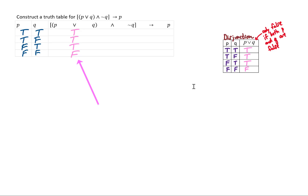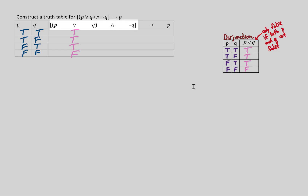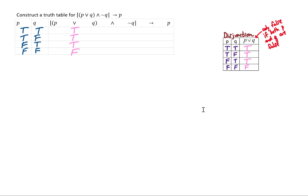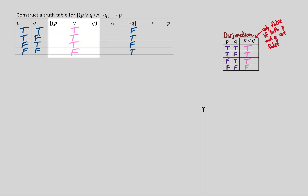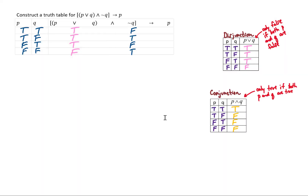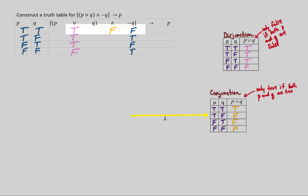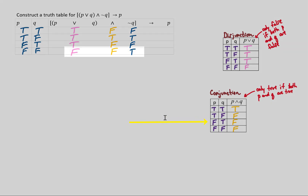Now we'll take that P or Q column and compare it with NOT Q using a conjunction. NOT Q is false, true, false, true — just reversing all the truth values in Q. Using the conjunction table, results are only true if both values we're comparing are true. So: true and false gives false; true and true gives true; true and false gives false; false and true gives false.